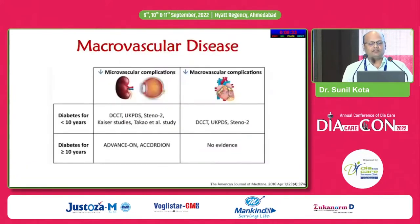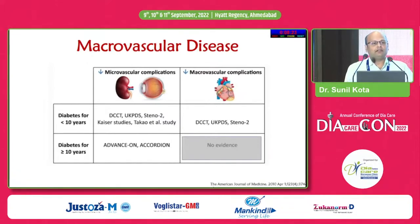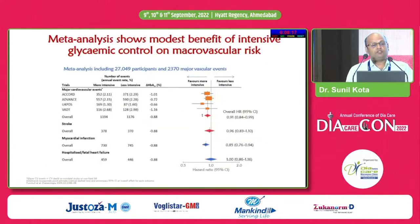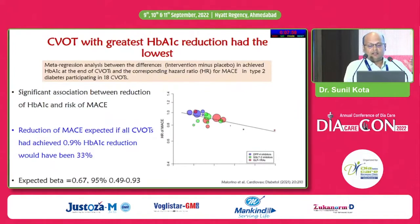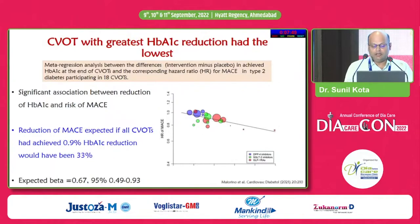Even in patients having obesity and diabetes, blood glucose control is required for microvascular complications. For macrovascular disease, we have evidence in patients with diabetes less than 10 years and more than or equal to 10 years. A meta-analysis published in 2009 tells us that the overall MACE reduction is a significant 9% and MI is also reduced by 15% with intensive glycemic control. A cohort study of more than 200,000 subjects shows that lower HbA1c yields higher MACE reduction — per 0.9% HbA1c reduction you get a 33% MACE reduction.